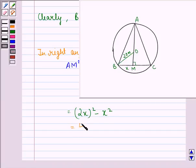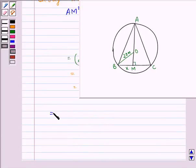This is equal to 4x square minus x square that is equal to 3x square. Now, AM square is equal to 3x square, so this implies that AM is equal to root 3x because we take square root on both the sides.